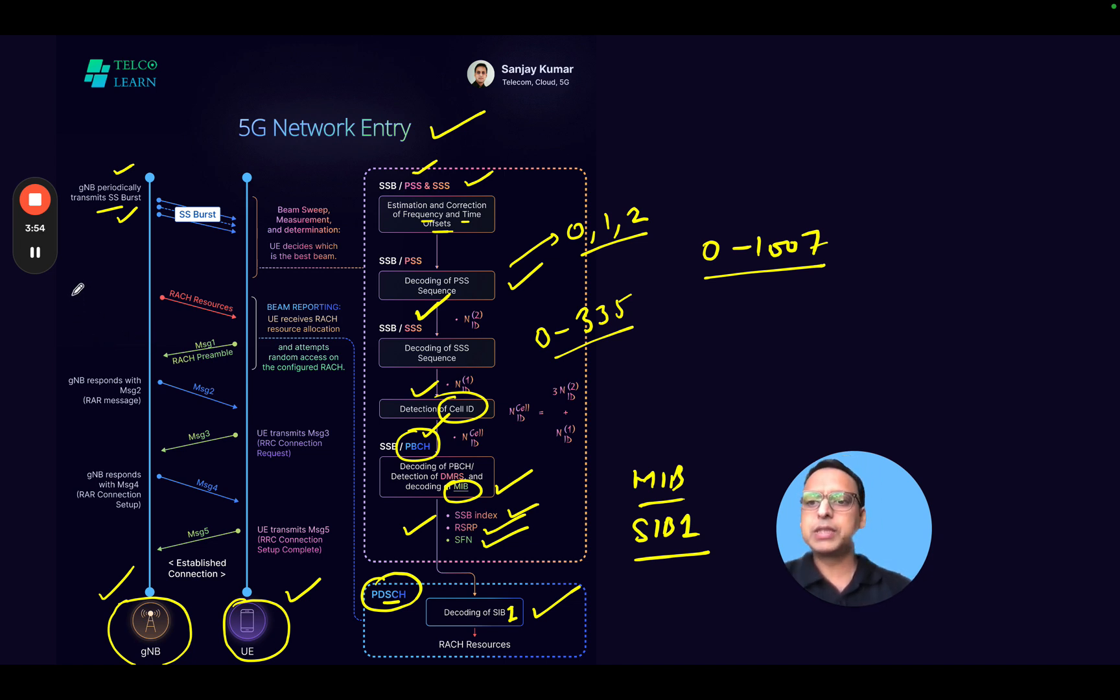The random access procedure is highlighted here. The network will keep informing the user about the RACH resources which are available, and there are multiple different ways of doing random access, including contention-based and contention-free random access. We will be discussing some of these things in future videos.